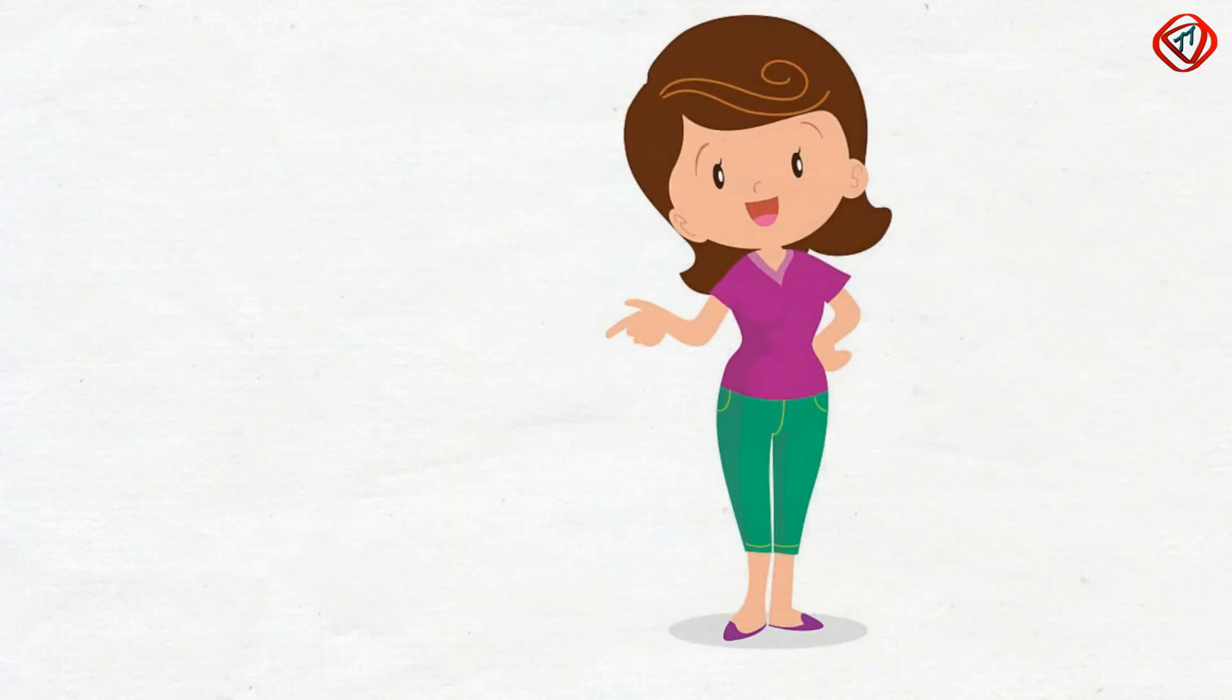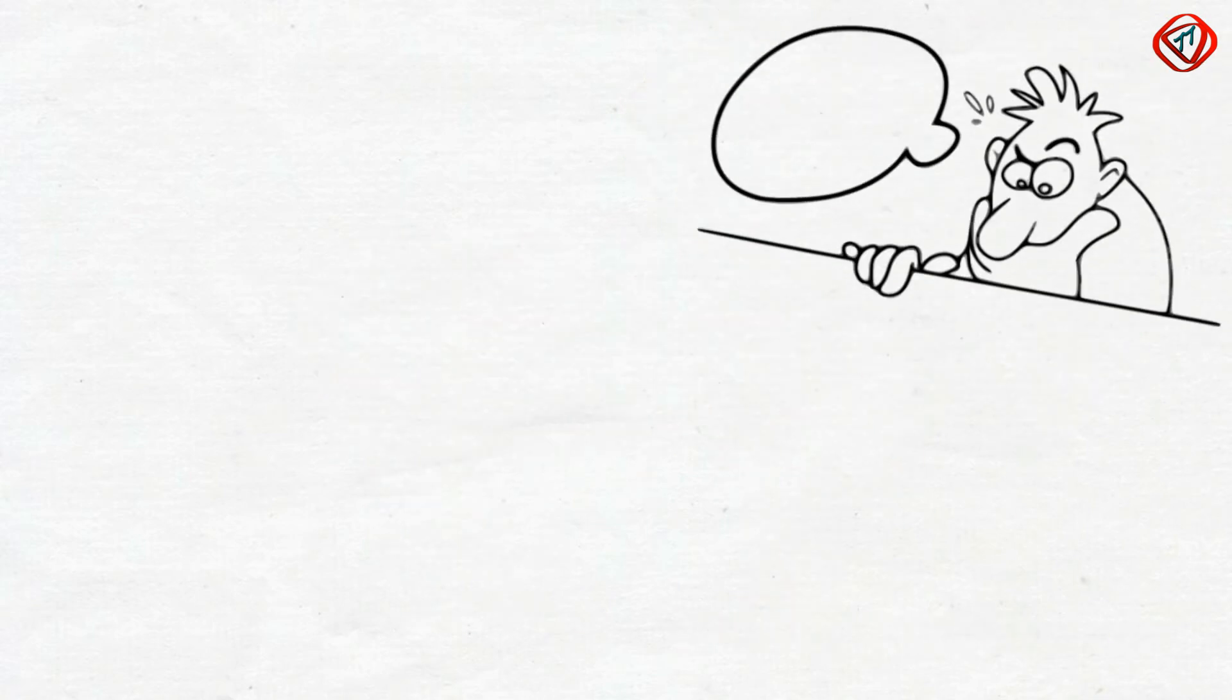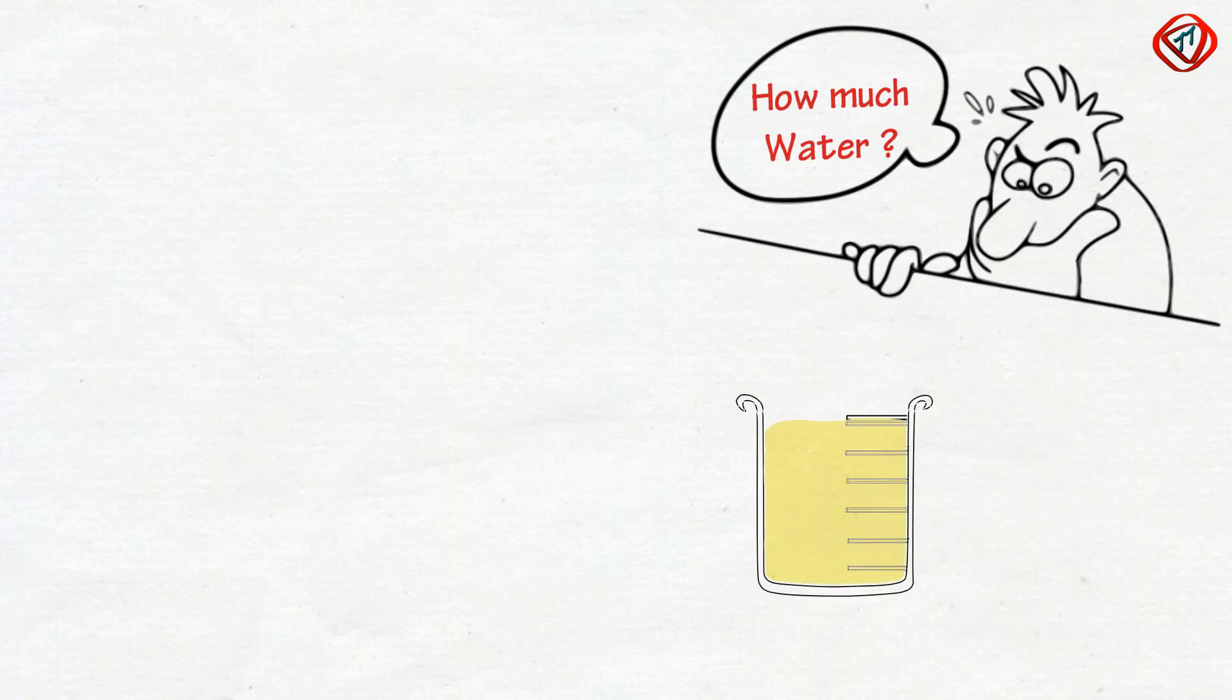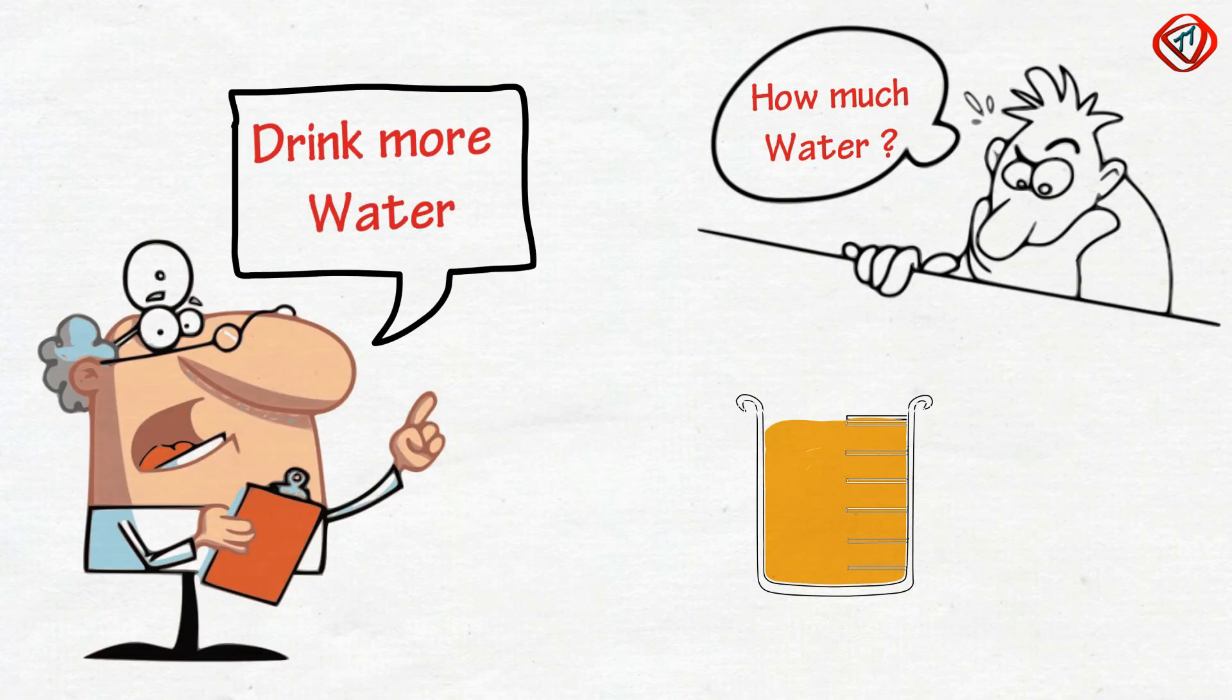Therefore, it is always recommended to drink at least 1.5 liters of water every day. The best way to determine if you are drinking enough water is to look at your urine color. If it is pale straw, you are drinking enough water. If it is dark yellow, you need to drink more.